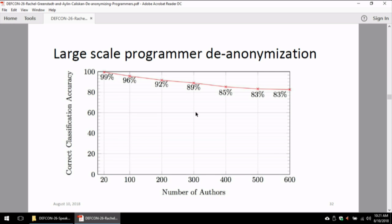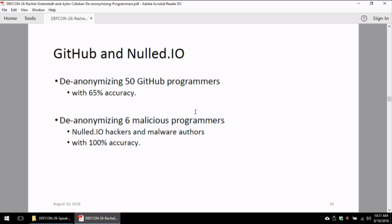What happens if we try to increase our class size and we have 600 programmers? We see that with 20 programmers having 99% accuracy in correctly de-anonymizing them. With 600 programmers, we get 83% accuracy, where the random chance of correctly identifying these people is less than 0.2%. We see that the accuracy degrades gracefully in this case.